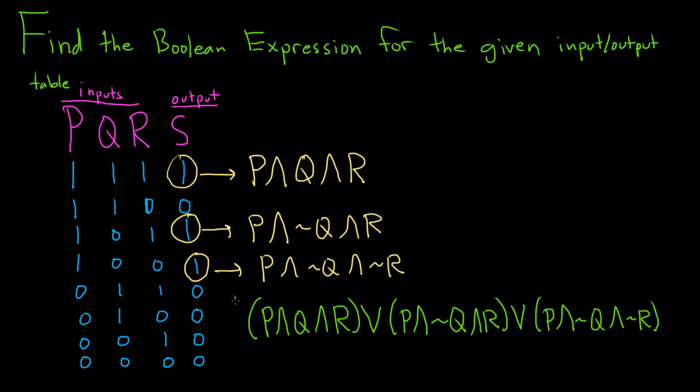And that would be the Boolean expression for the input output table for this circuit. So again, you just focus on the ones. And then whenever it's 1, you just keep the letter. Keep the statement variable. And then whenever it's 0, you negate it. So like here it was a 0, so you put not q. And just put ands between them. And then when you're done, just put ors around them. And there you go. I hope this video has been helpful. Good luck.